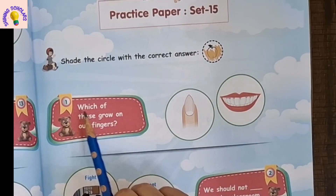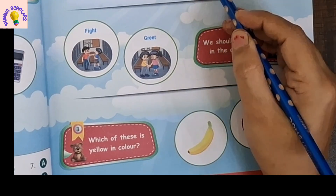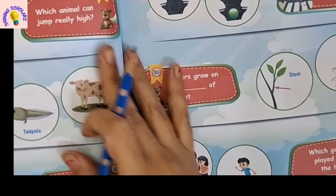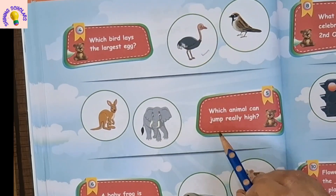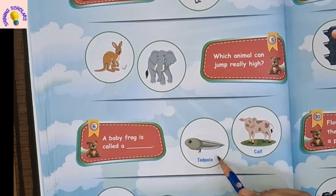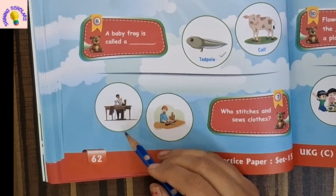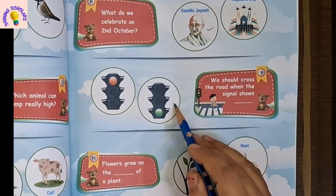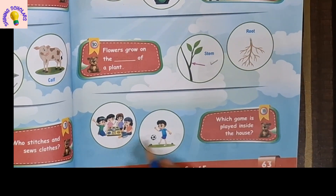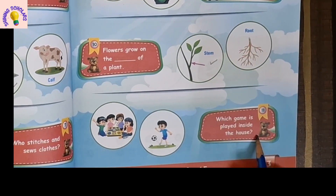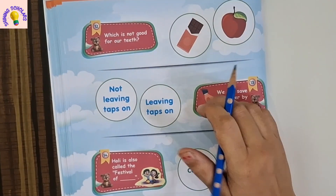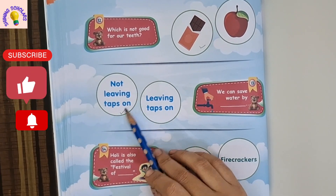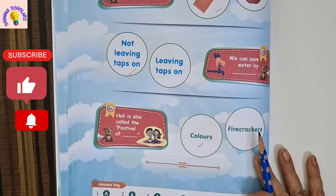Last set of question paper. Which of these grow on our fingers? Nails. We should not fight in the classroom. Which of these is yellow in color? Banana is yellow in color. Which bird lays the largest eggs? It's ostrich. Which animal can jump really high? Kangaroo. A baby frog is called a tadpole. Who stitches and sews clothes? It's the tailor. What do we celebrate on 2nd October? It's Gandhi Jayanti. We should cross the road when the signal shows green. Flowers grow on the stem. Which game is played inside the house? It's Ludo. Which is not good for our teeth? Chocolates are not good for our teeth. We can save water by not leaving taps on. Holi is called the festival of colors. At the end are the answers.